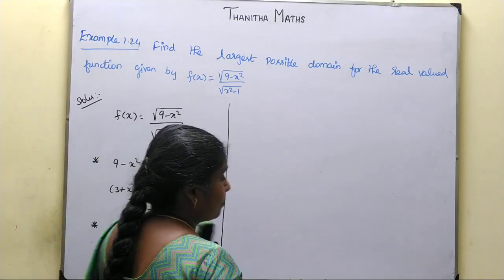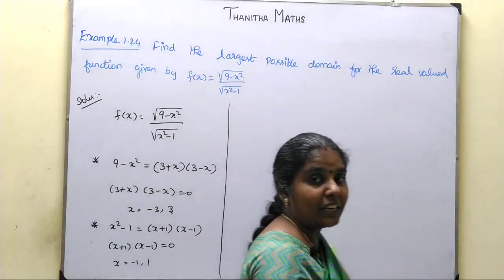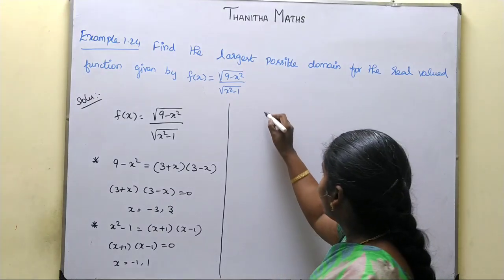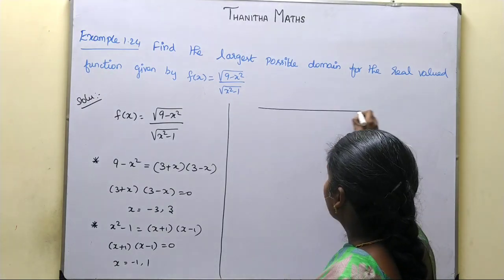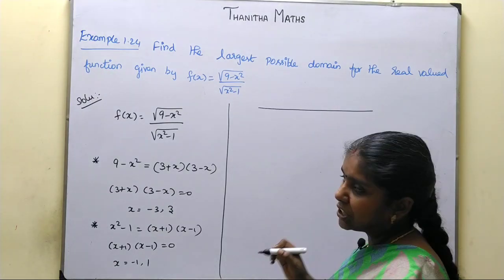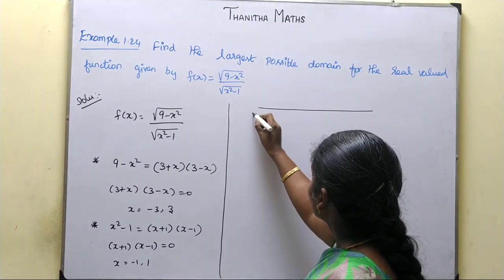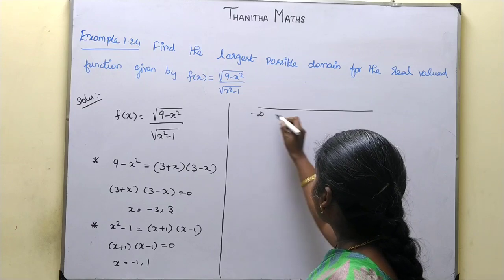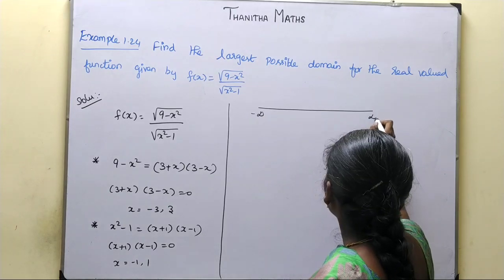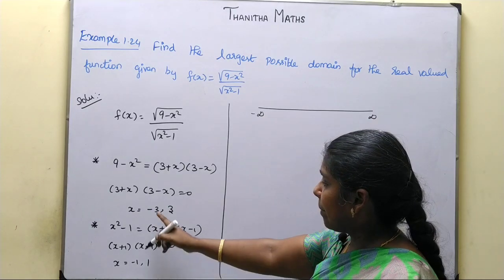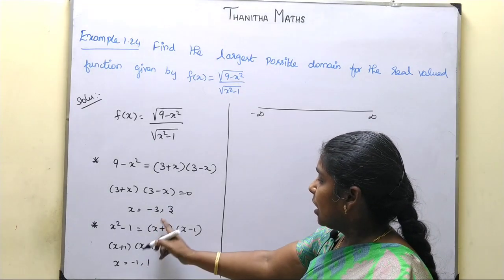Now we will plot on the number line. How many intervals do we have? We will check each interval for positive and negative values. The critical points are -3, -1, +1, and +3, giving us intervals to check.